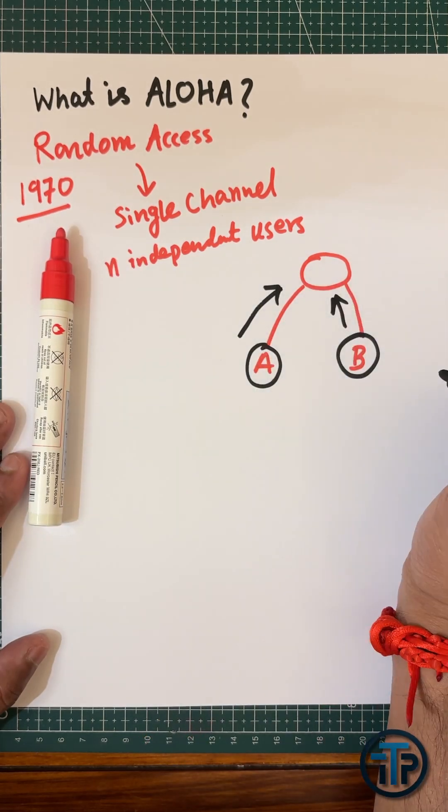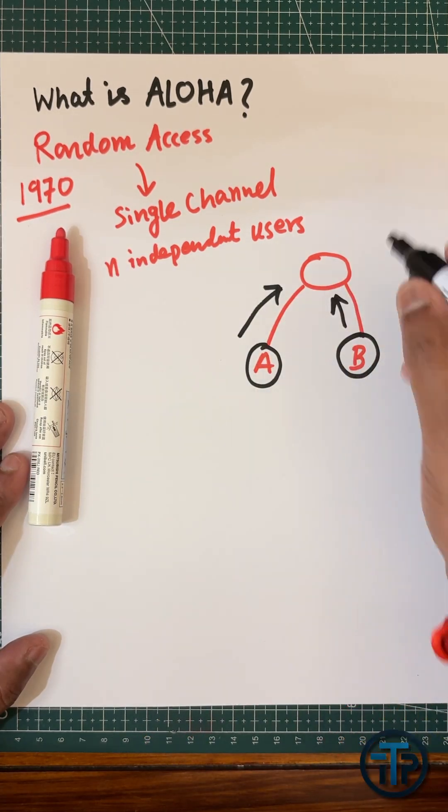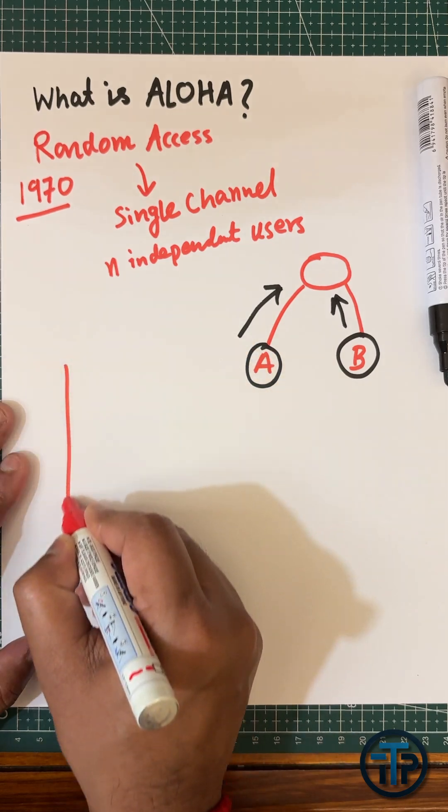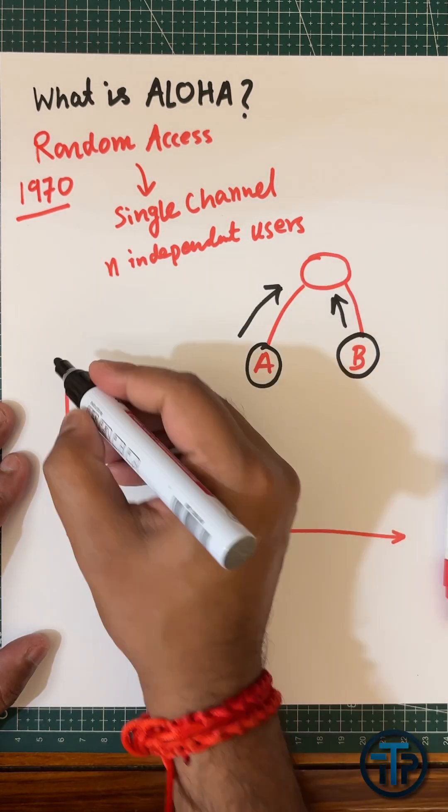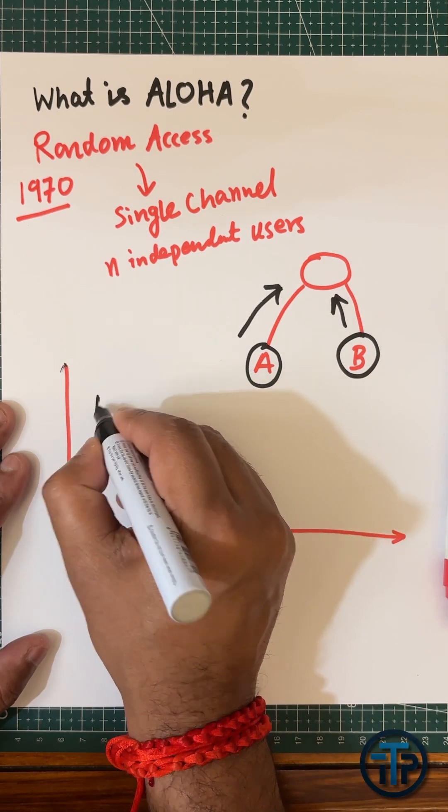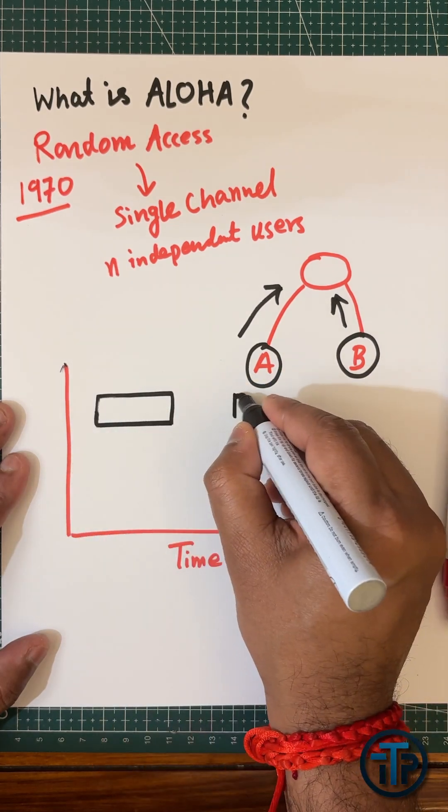That is the concept of multiple access. Now what will happen if they transmit data independently? There will be some kind of packet collision. Take an example: for instance, A is sending